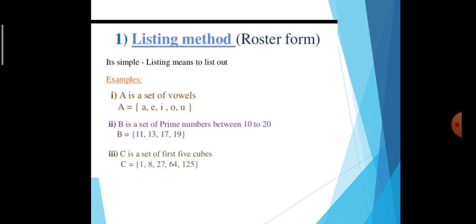Roster form is also called the listing method — it simply lists out elements. For example: A is a set of vowels, so A = {A, E, I, O, U} — that is roster form. B is a set of prime numbers between 10 and 20, so B = {11, 13, 17, 19} — also roster form. C is a set of first 5 cubes: 1³=1, 2³=8, 3³=27, 4³=64, 5³=125 — that is also the listing method or roster form.